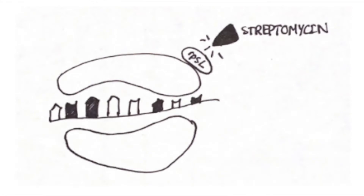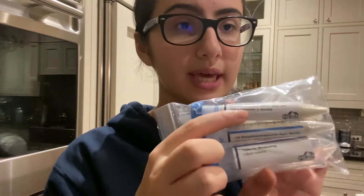Now that we have a mutated version of the RPSL protein, streptomycin can no longer attach itself to the ribosome, and the E. coli can continue to grow on the streptomycin media.